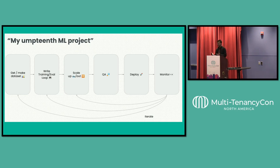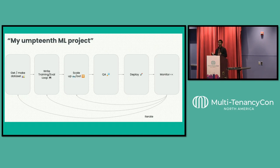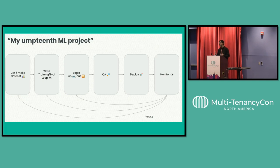Then it's all about scaling it, similar to how you scale microservices. ML is not that different from standard software development — the end goal is still to scale up your services. Once you scale it, you do QA, testing your model with some test data. Then you deploy it and monitor it, just like any traditional service with Prometheus and Grafana — you can monitor your model performance very similarly. If it does not work well, you reiterate and follow the steps inside your standard machine learning process.